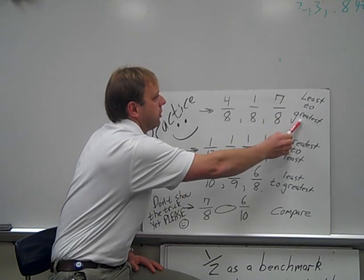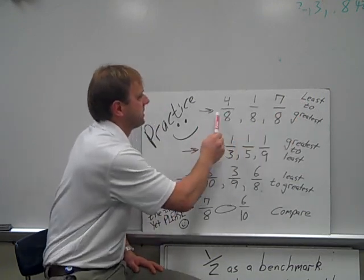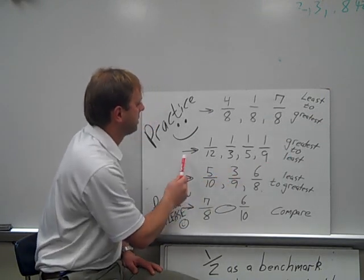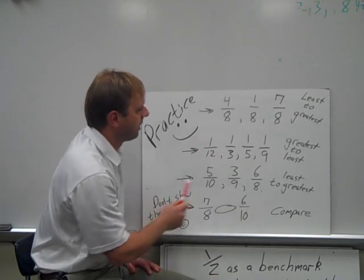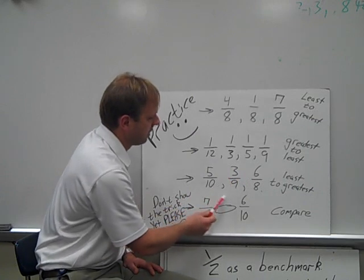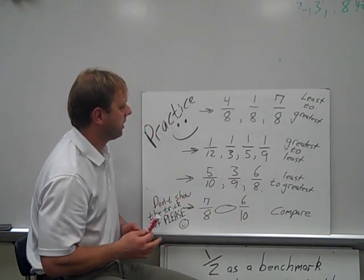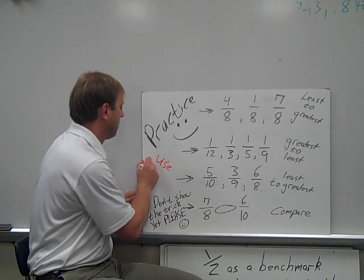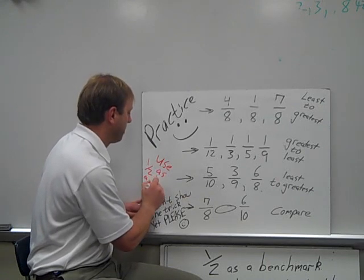Remember, always look. Least to greatest, you have three numbers, same denominator. Greatest to least, you have four numbers, same numerator. And then least to greatest, you have three numbers with different denominators. So this one, you are going to use one-half as a benchmark, okay?